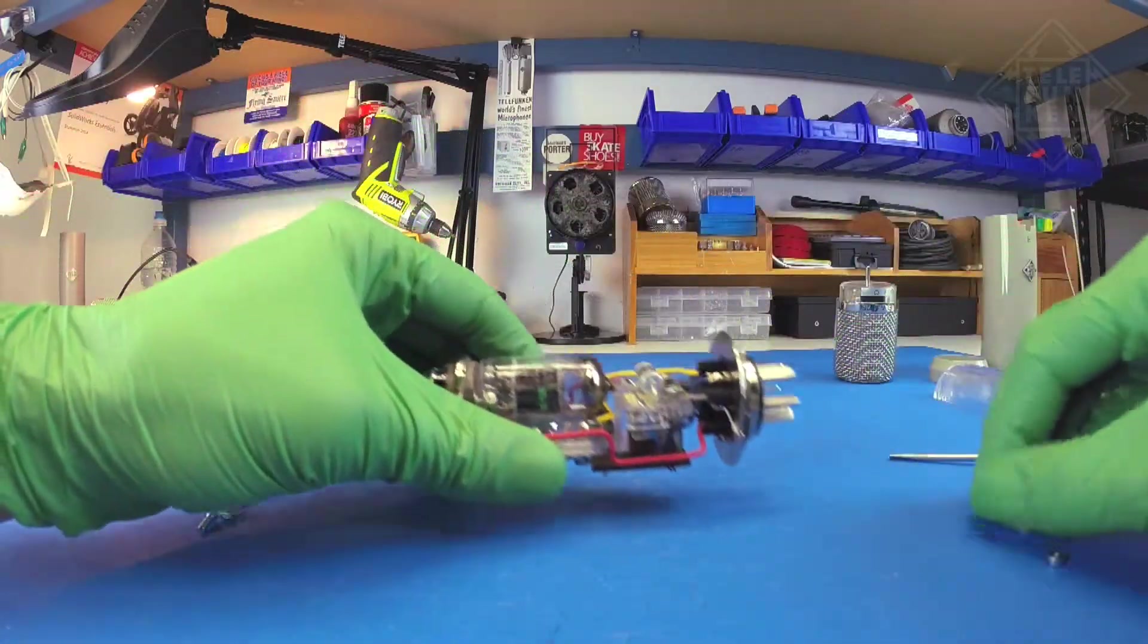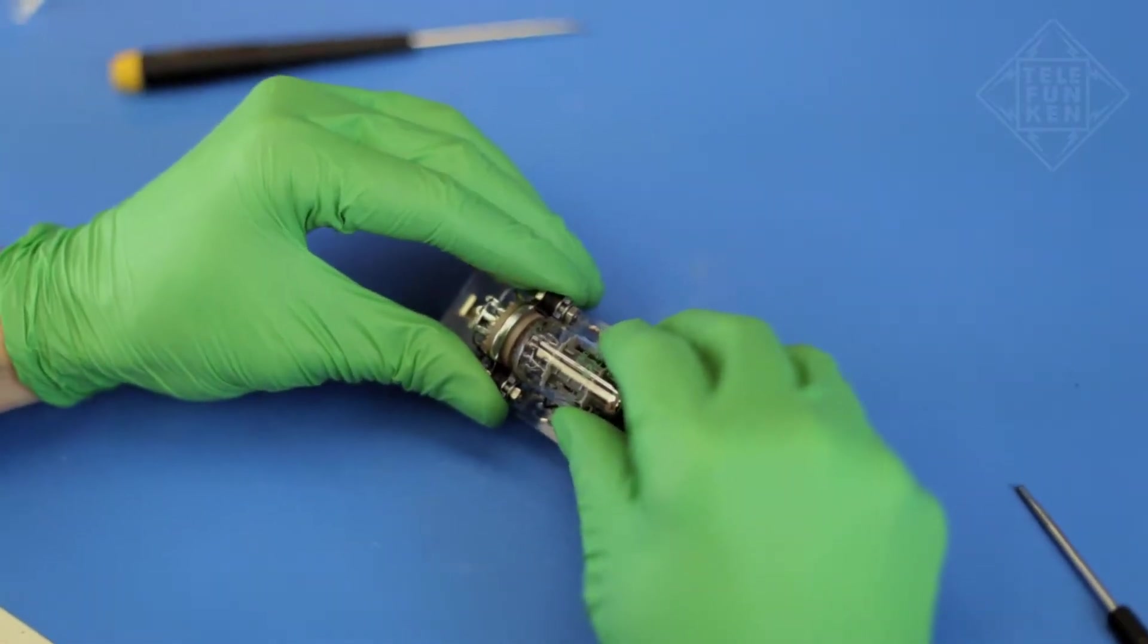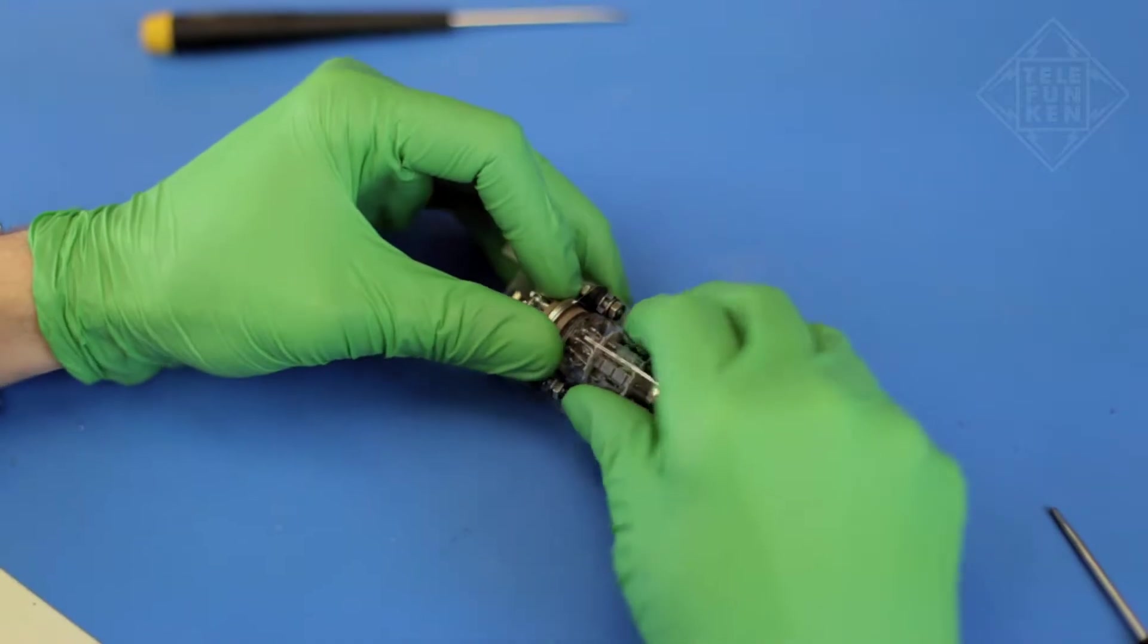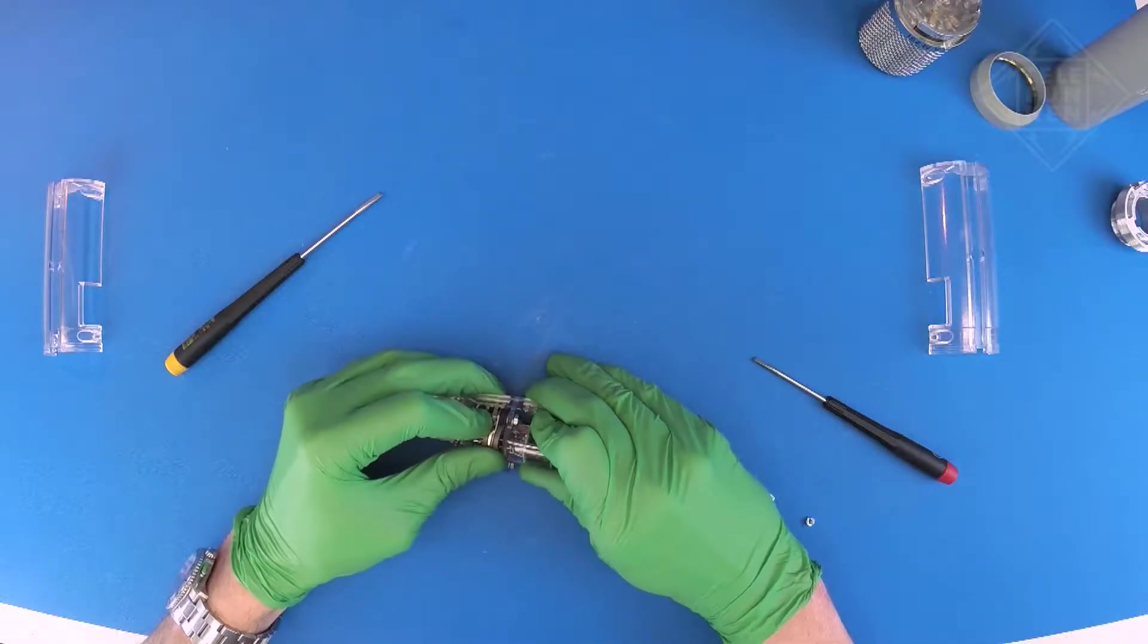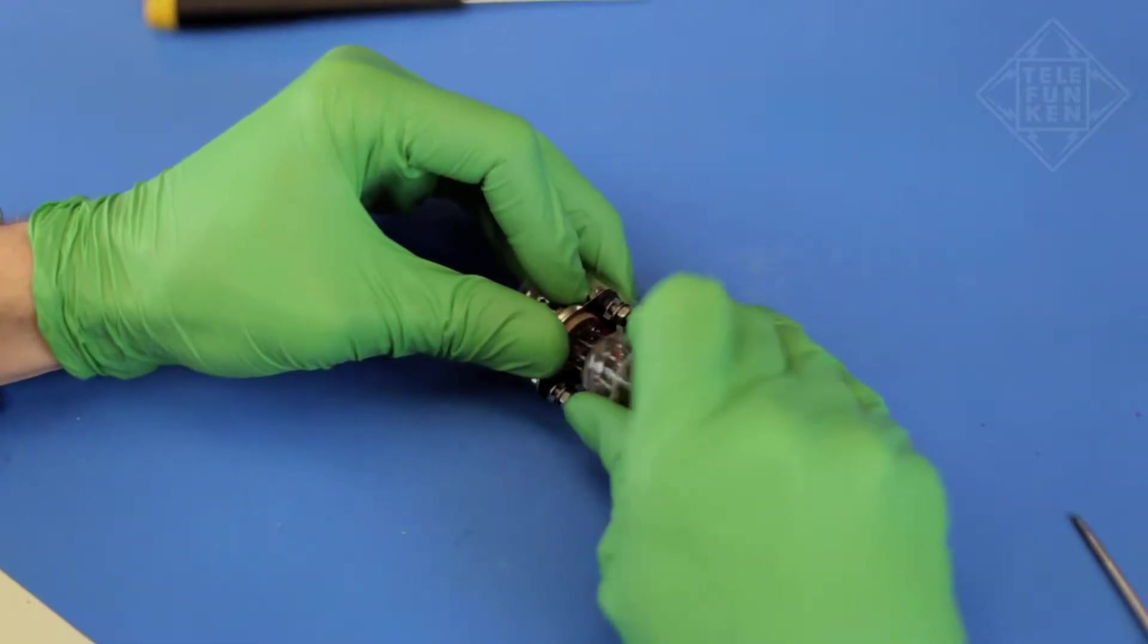Lay the microphone flat on its surface and grip the tube socket with one hand and the tube with the other. Gently pull on the tube while rocking it back and forth to loosen it if necessary. Be careful not to bend the pins.